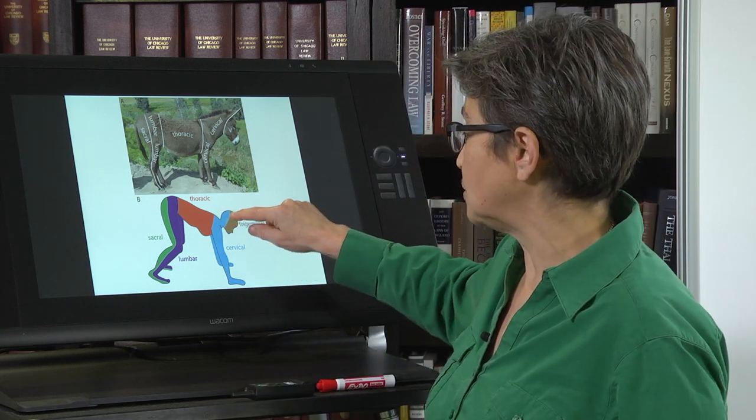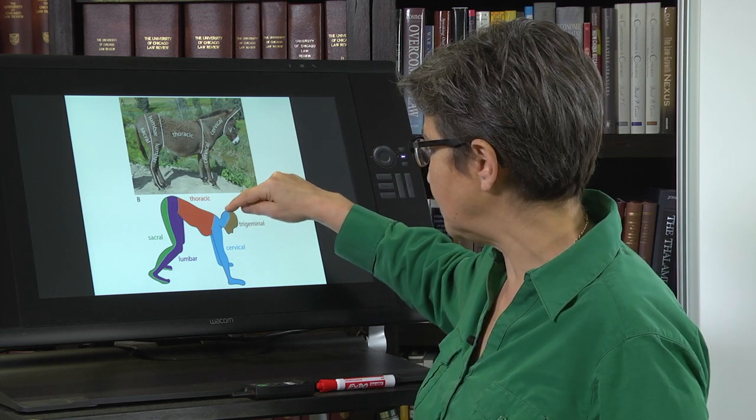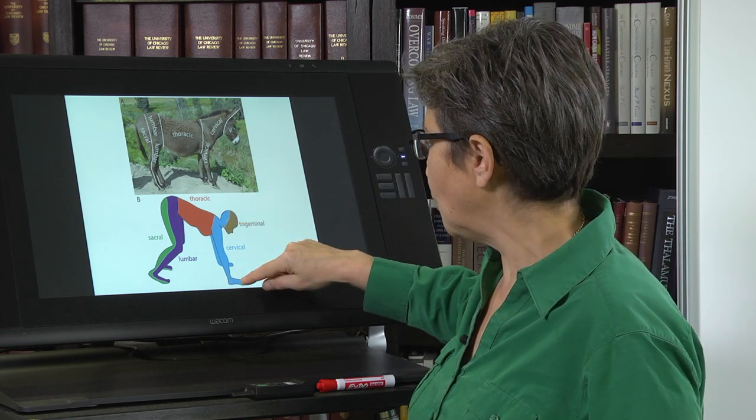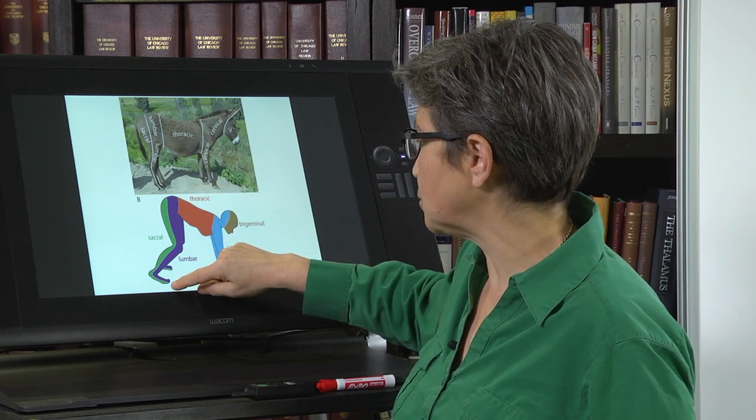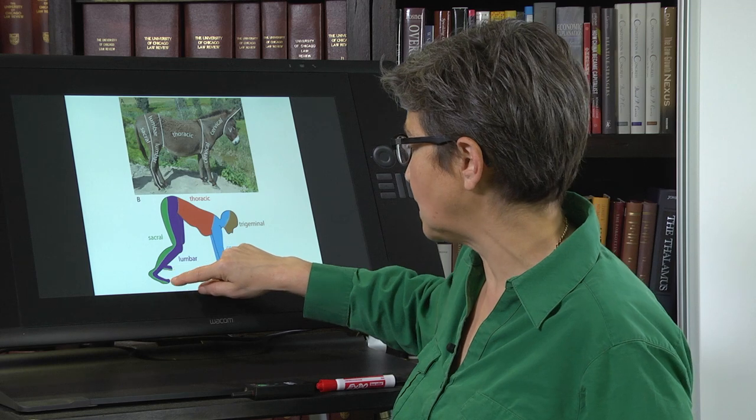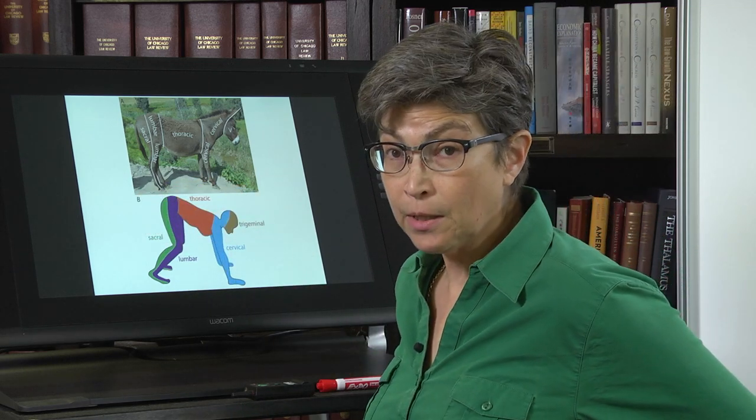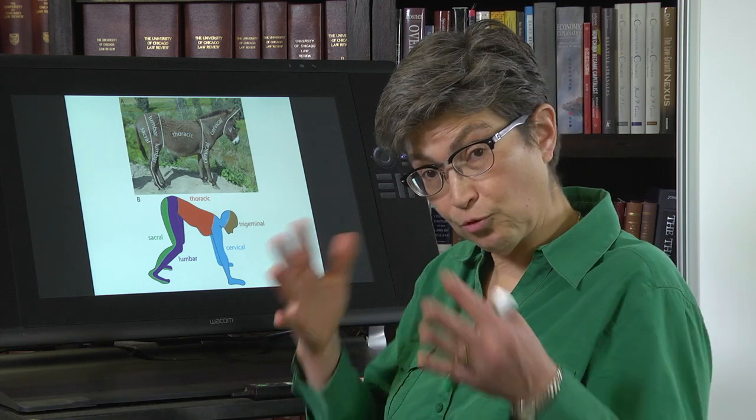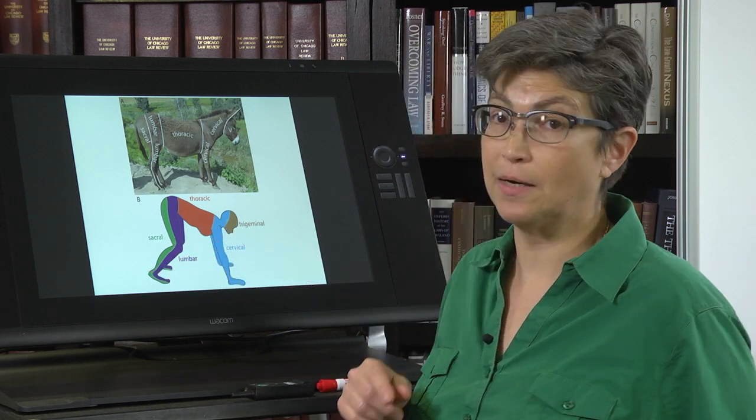Cervical is going to serve the back of the ears, the back of the head, the arms. Thoracic is going to serve the trunk. Lumbar is going to serve the front of the legs and the top of the feet. Sacral is going to serve the bum, the perineum, the saddle region, and the back of the legs and the bottoms of the feet.